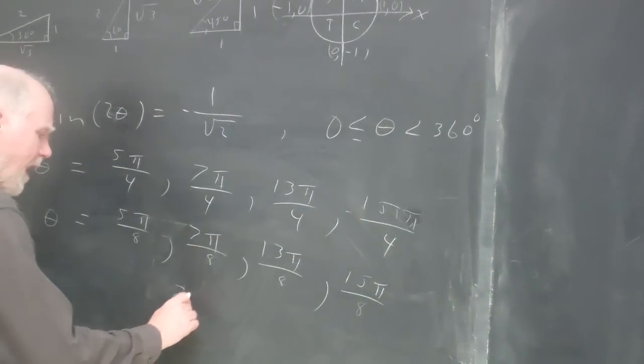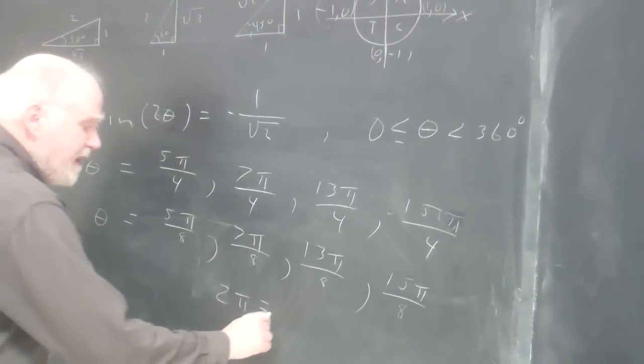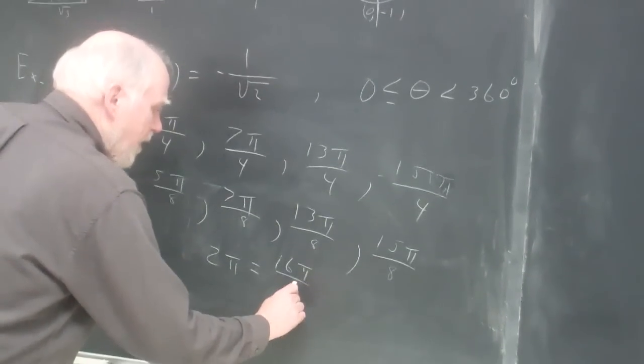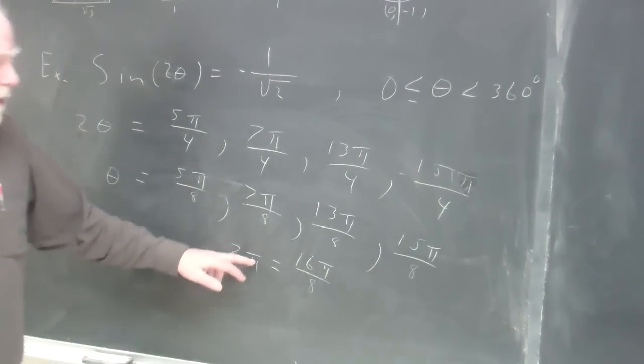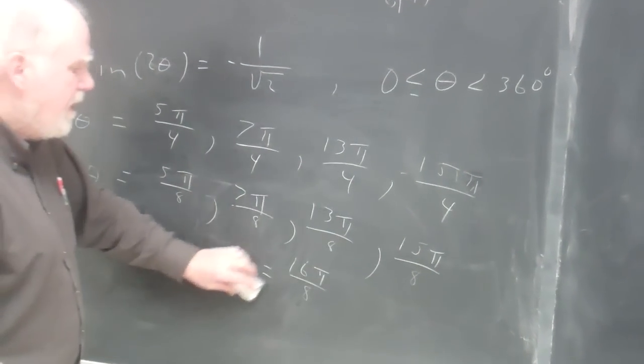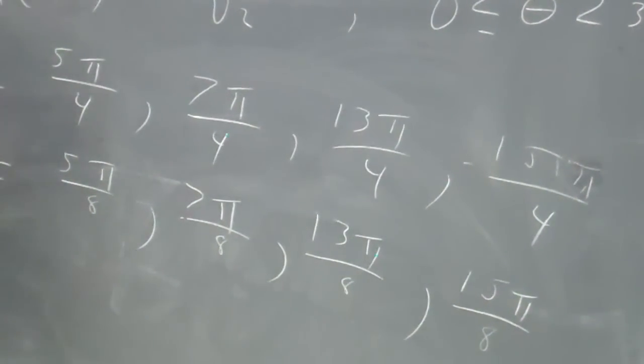And remember, 2 pi, or 360 degrees, is 16 pi over 8, right? Because it divides in and gives you 2 pi. And each one of these are less than 2 pi and greater than 0. So these are the solutions.